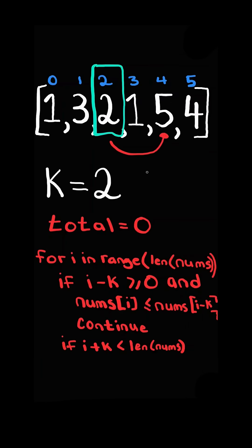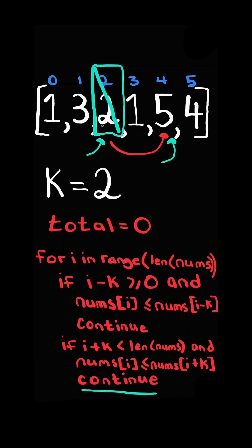If i plus k is within bound, and nums[i] is less than the value at nums[i+k], it is not a good number, so we continue.